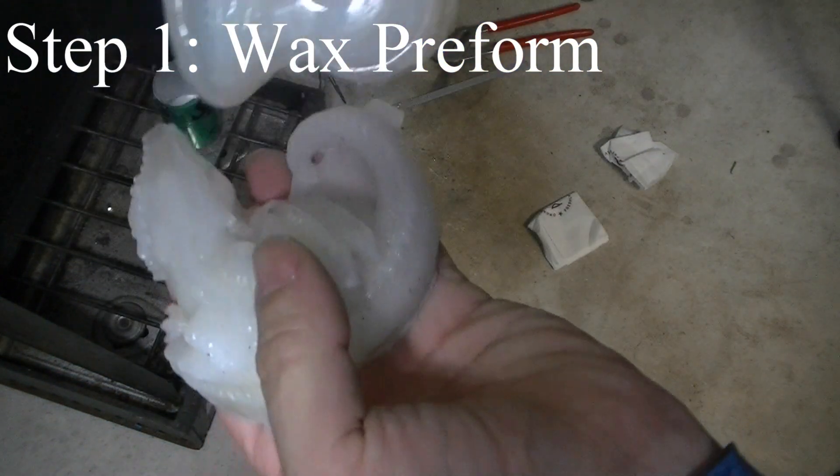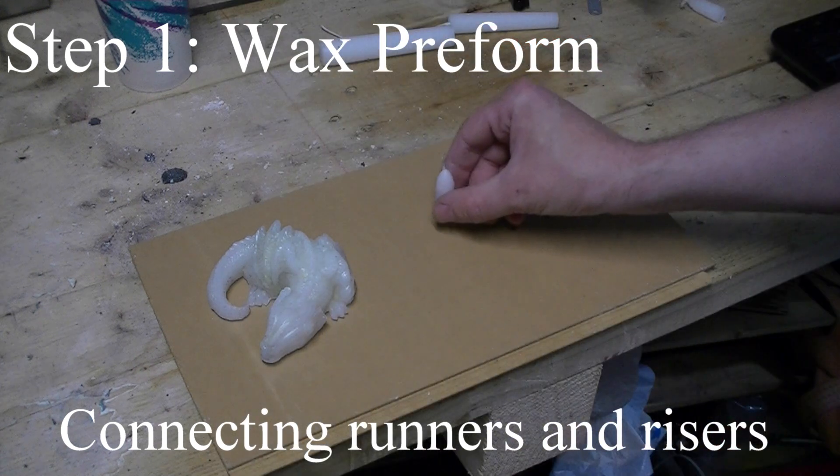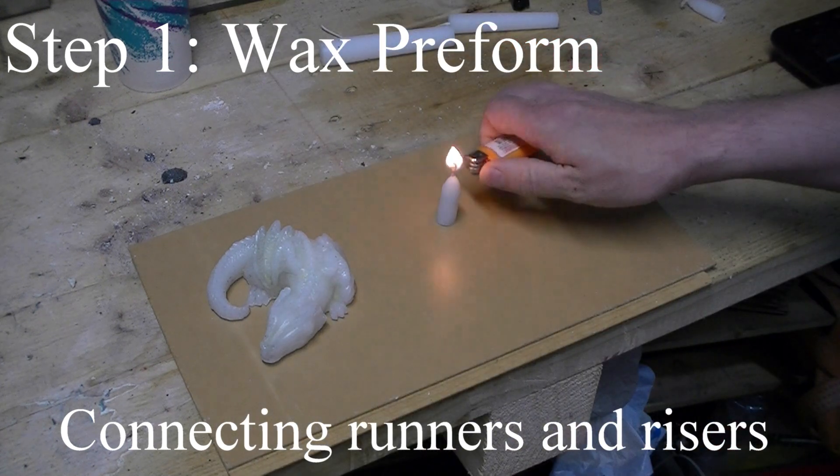After the metal solidifies, the ceramic is knocked off and hey presto, a metal form of the original wax preform is released.